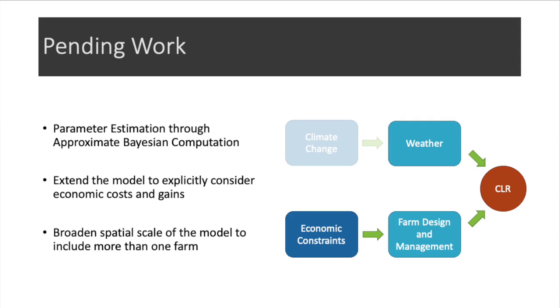So I developed this model as part of my dissertation, so there are several points that are still pending work. First, I have to complete a parameter estimation through approximate Bayesian computation, which can take advantage of the distributed computing capabilities of Julia. I also have to extend the model to explicitly consider economic costs and gains for the coffee farmer to be able to better incorporate the factor of economic constraints within the farm design and management decisions.